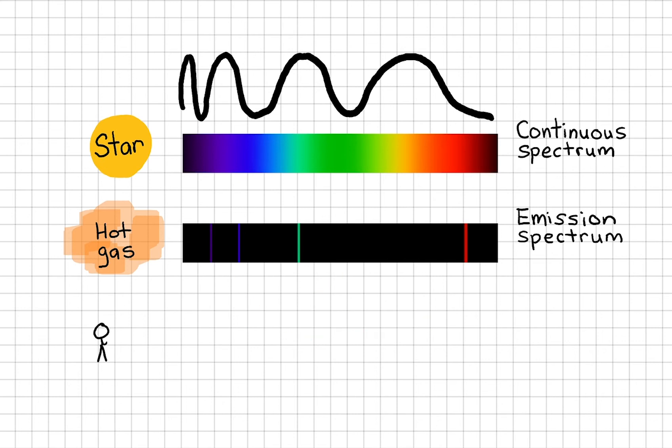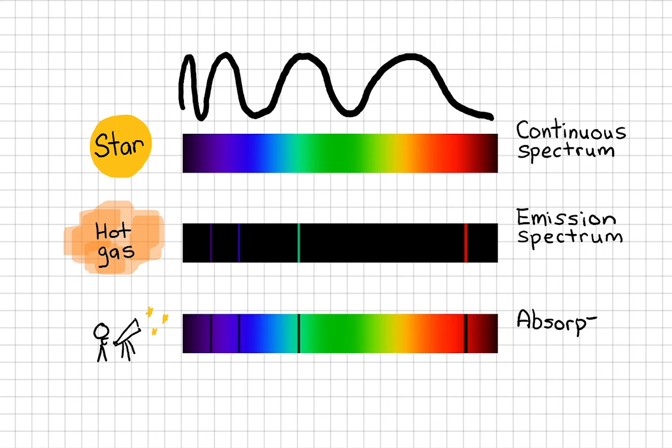When we observe stars on Earth, we see spectra like this. This is called the absorption spectrum.